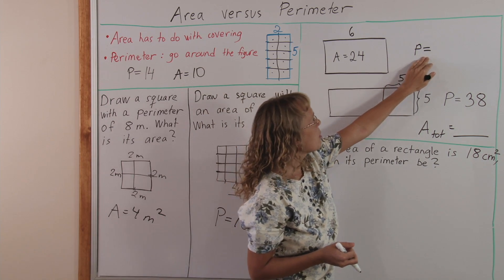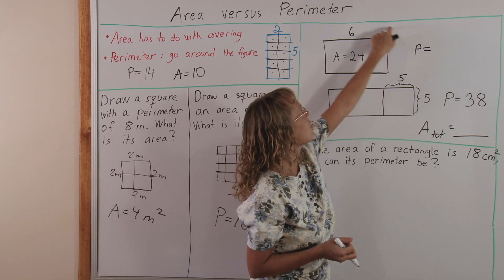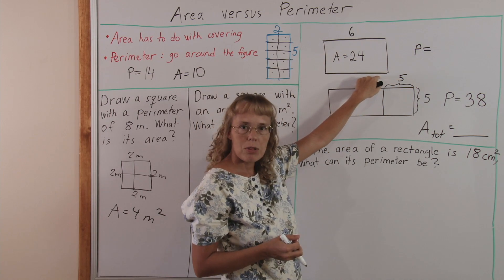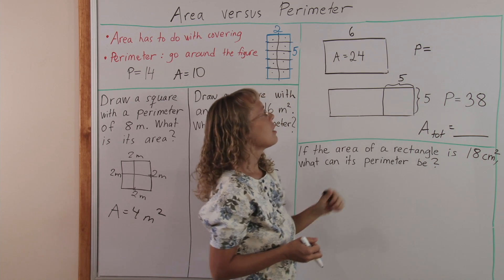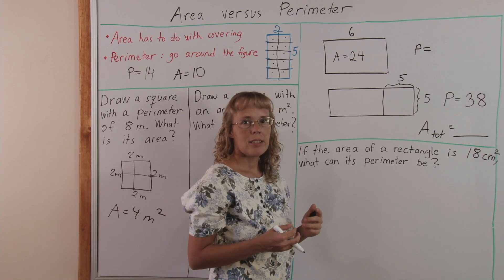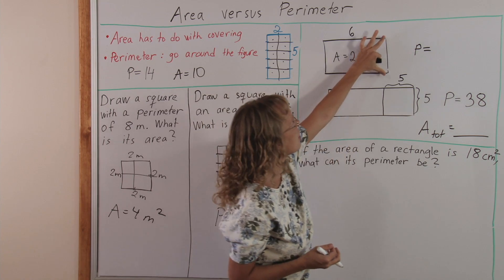So the perimeter is the go-around, and to solve that we would need to know how long is this side here. And of course, we will use the area to find this unknown side.